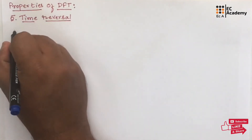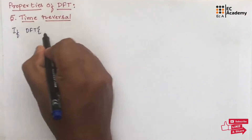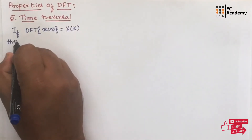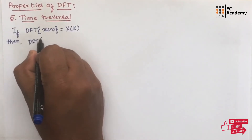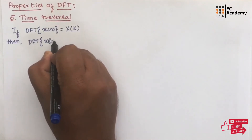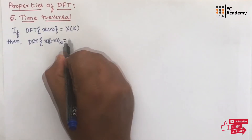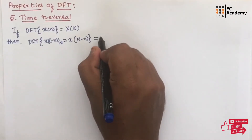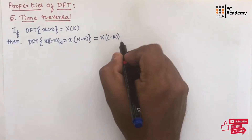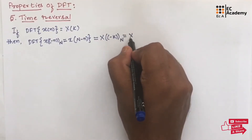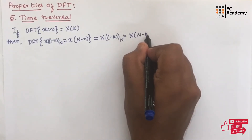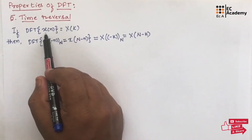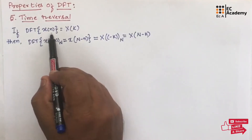Let us write the statement first. If DFT of x of n is equal to capital X of k, then we can write DFT of x of minus n mod N, which will be equal to capital X of minus k mod N, that can be written as capital X of capital N minus k. Here, x of minus n mod N represents the time reversal of x of n.